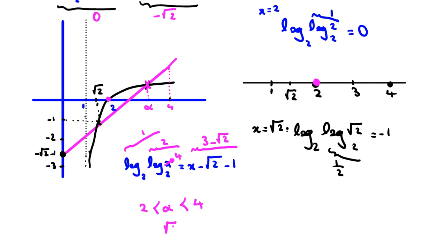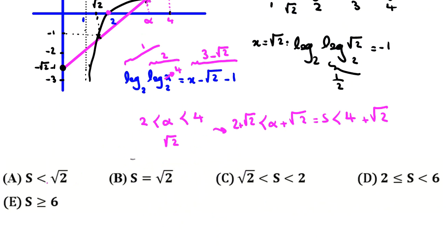The two roots are root 2 and alpha (between 2 and 4). So s = root 2 + alpha, which satisfies 2 + root 2 < s < 4 + root 2. Checking the answer choices: A (s < root 2) is wrong; B (s = root 2) is wrong; C (root 2 < s < 2) is wrong since s > 2 + root 2; D (s > 2) is correct; E (s > 6) is wrong since s < 4 + root 2 < 6. So D is the answer.